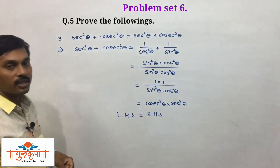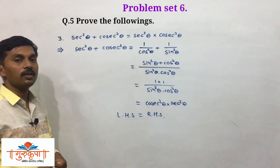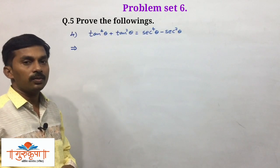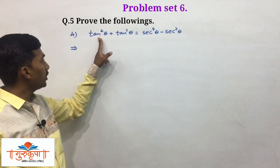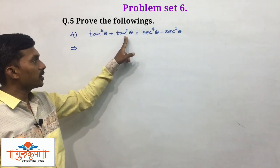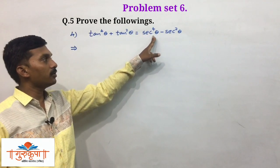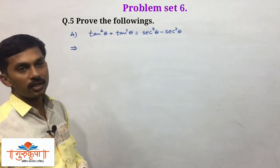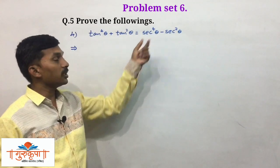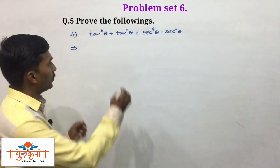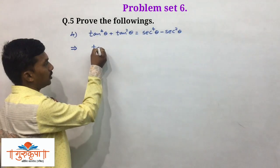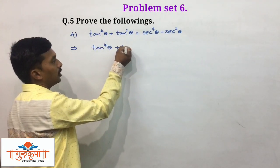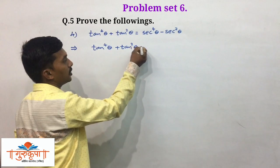We will take the next example — example number 4 from question number 5. The expression is: tan to the power 4 theta plus tan squared theta equals sec to the power 4 theta minus sec squared theta. We have to prove LHS equals RHS. We write LHS as it is: tan to the power 4 theta plus tan squared theta.